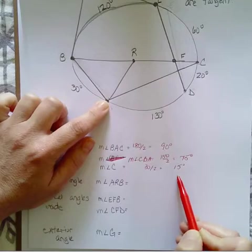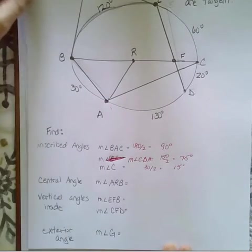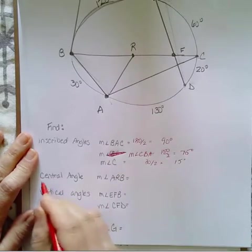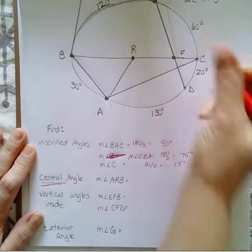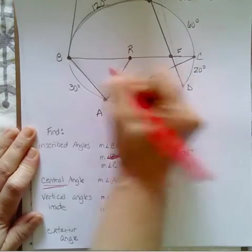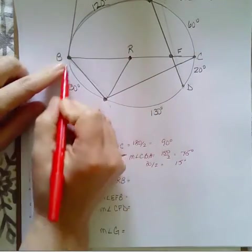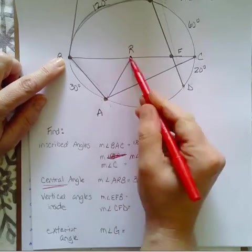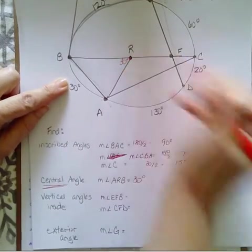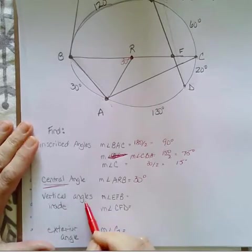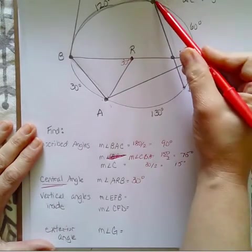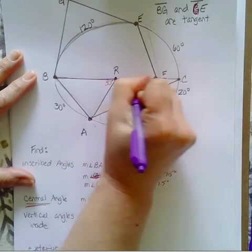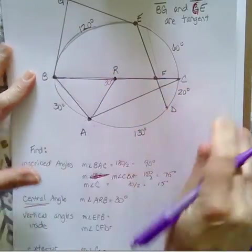Measure of angle B - whoops, you know what? We have to fix this because there are a couple of Bs. Let's say CBA. Okay, so the measure of angle CBA is over here, and if I cut this way and I cut this way, this is its intercepted arc, and that's 130 and 20 together, so that's 150 divided by 2, and that's 75 degrees.